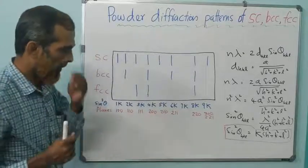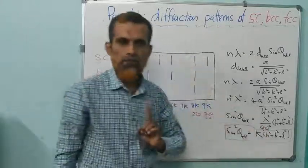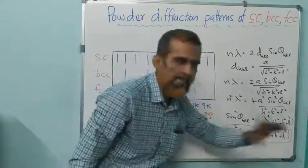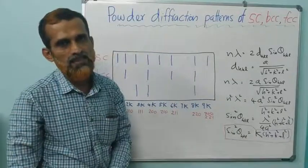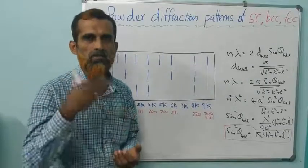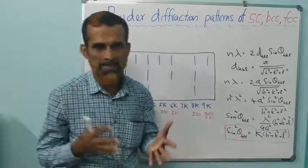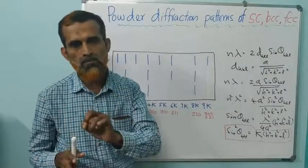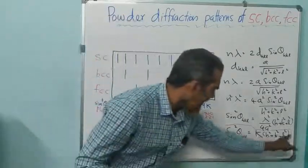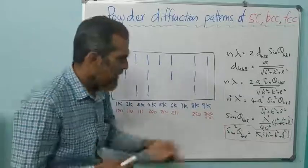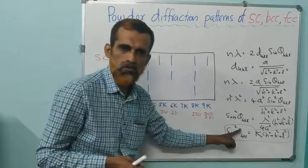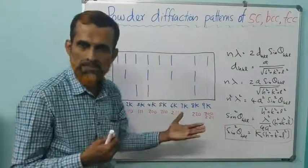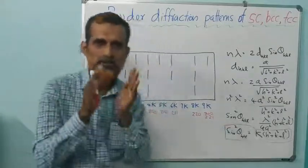What we do is put all possible values for HKL — the Miller indices — starting from 1,0,0, then 1,1,0, 1,1,1, 2,0,0, and so on. Putting all values of HKL, you get various values for θ — various angles for various planes at which you get reflections.